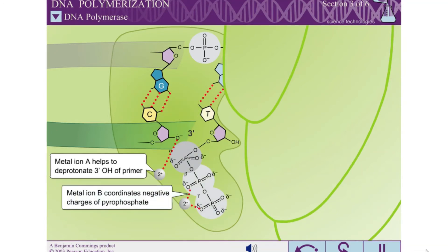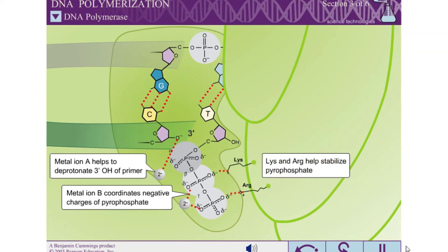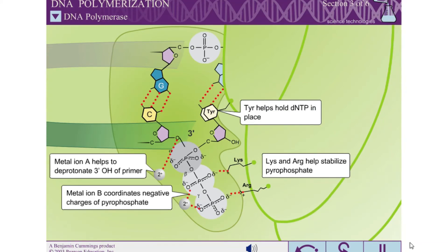Metal ion B coordinates the negative charges of the beta and gamma phosphates of the DNTP, and stabilizes the pyrophosphate leaving group. Lysine and arginine residues on the finger domain also help to stabilize the pyrophosphate. And, through stacking interactions, a tyrosine residue attached to the fingers helps to hold the DNTP in place for catalysis.